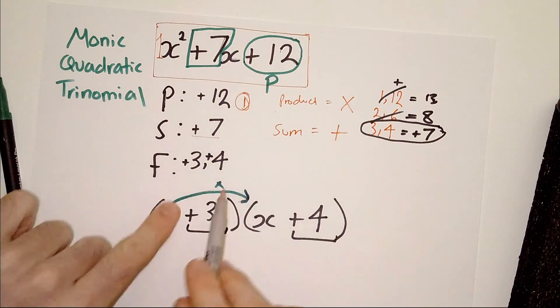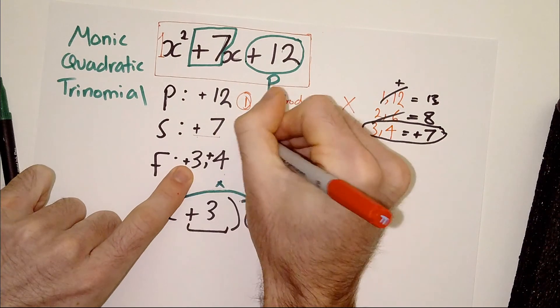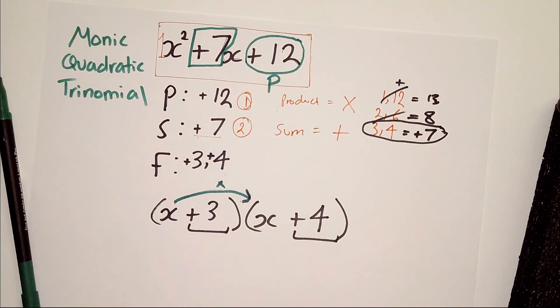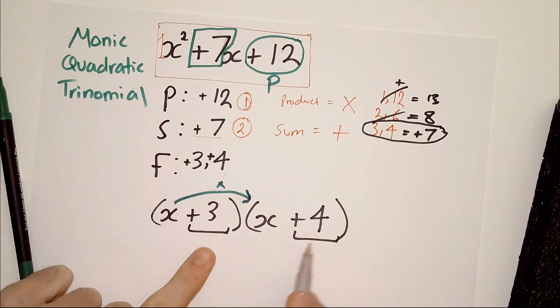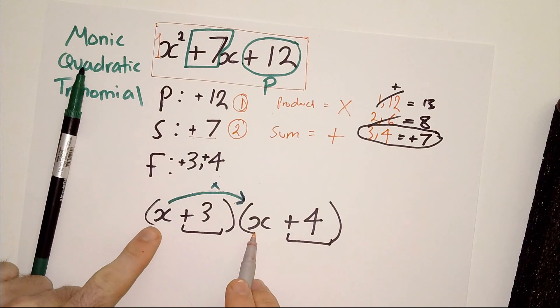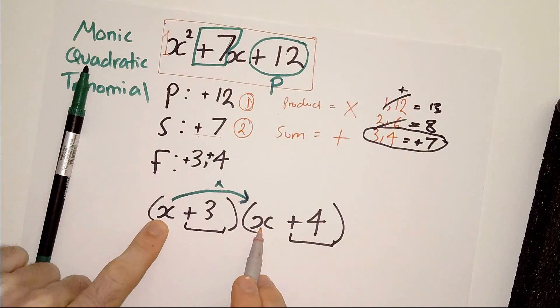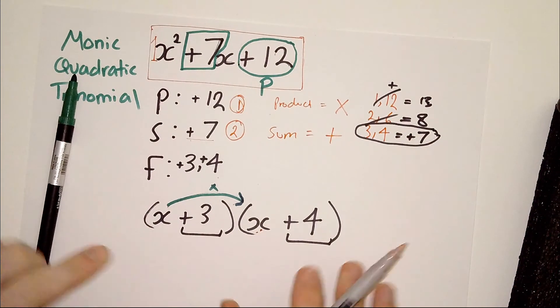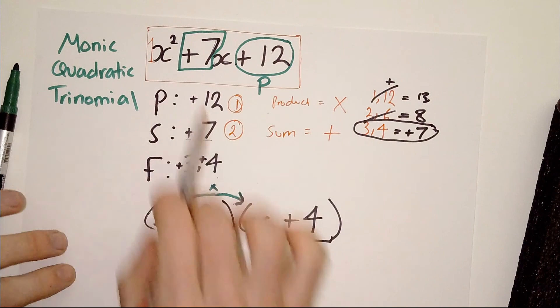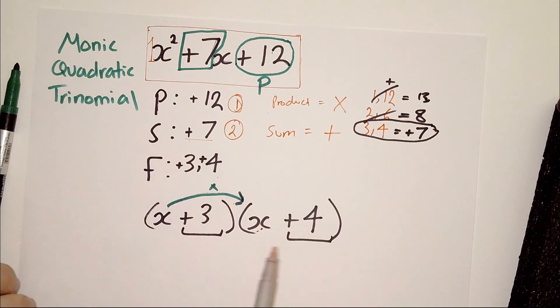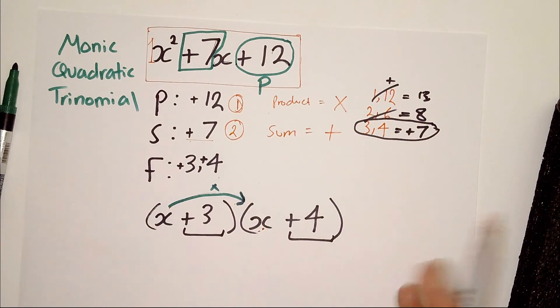Which would add together to this number, plus seven in this case, which is the number before the X. Okay? Once you figure out the two factors that satisfy both of these two conditions, they simply slot into the spaces down here in the bracket, because we knew again for sure that the first things on each of those brackets was going to be X. Because X times X is X squared, which takes us back to the original. Okay, that is how you factorize a monic quadratic trinomial.